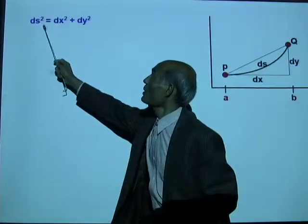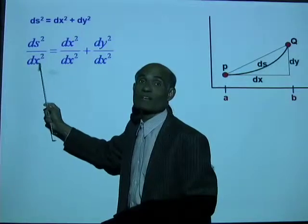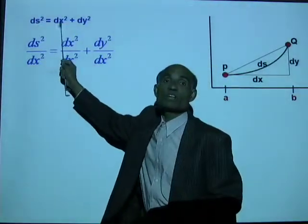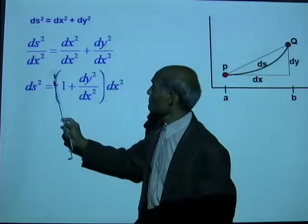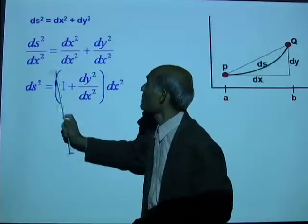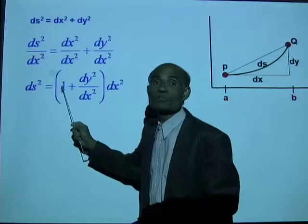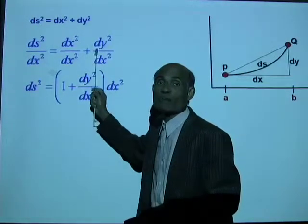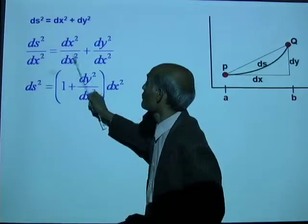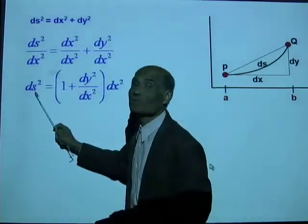Now, let's divide both sides by dx squared. ds squared divided by dx squared equal to dx squared divided by dx squared plus dy squared by dx squared. Just divide each term by dx squared. That gives you ds squared equal to — simplifying and then multiplying every term by dx squared — we get ds squared equal to 1 plus dy squared over dx squared times dx squared.